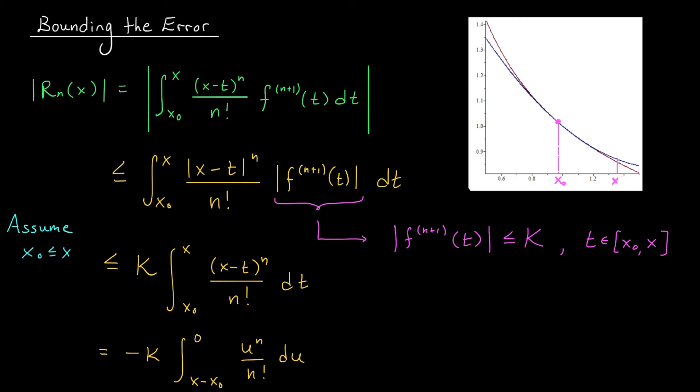Well, at this point, the integral is quite easy. We increase the power of u by 1 and divide by n plus 1. That will give us an (n+1) factorial on the bottom. When you sub in your bounds, you should be left with k times (x minus x0)^(n+1) divided by (n+1) factorial.